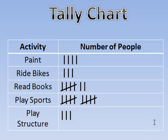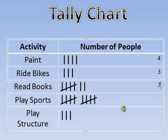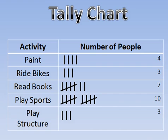So what we do with these tally charts — as we're counting along I can go back now and figure out the exact number of each one. There are four people who wanted to paint, three people chose riding bikes, seven children wanted to read books, ten wanted to play sports, and three kids wanted to do the play structure. Remember when you're doing a tally chart, every number is just a line, but every fifth one — once we get a group of four — that fifth line has to go across them, like a rubber band that keeps it together.